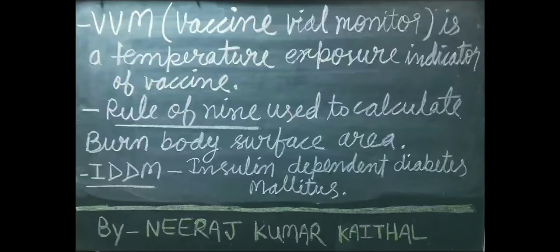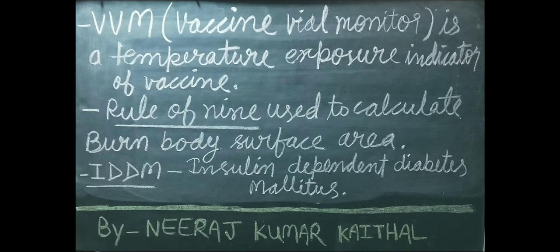Rule of 9 is used to calculate burn body surface area. Rule of 9 ki sahayata se hum kisi patient mein kitna percent burn hua hai yeh calculate karte hain. IDDM ka full form hai Insulin Dependent Diabetes Mellitus.